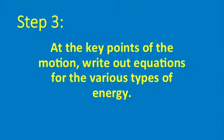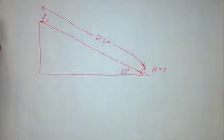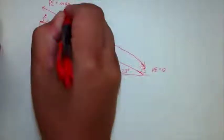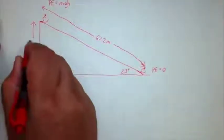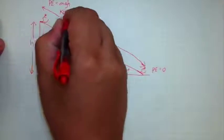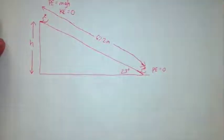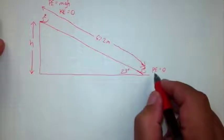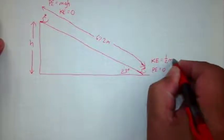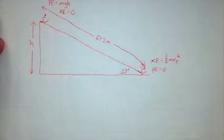Step three is then to indicate on the diagram what the kinetic and potential energies are of the object at the key points. So here in our diagram, we would, up here, say that the potential energy at the top of the slope is mgh, where h is the height of the slope, the vertical height of the slope. And since we start from rest, the kinetic energy will be zero. Down here at the bottom of the slope, we've already established that the potential energy is zero, and then the kinetic energy will be one-half m v final squared. There's only two key points in the motion, and so step three is complete.